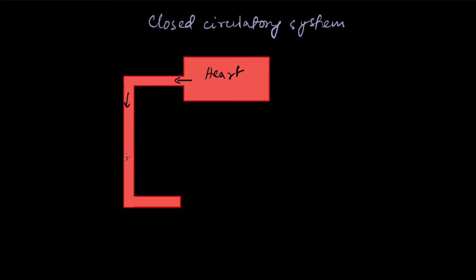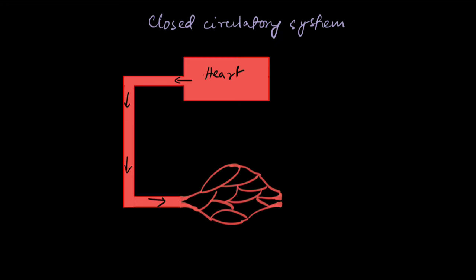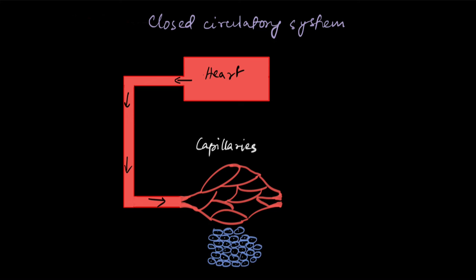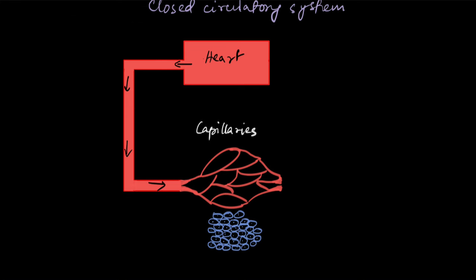The blood flows through these blood vessels, and then the blood vessels subdivide to form very fine, small blood vessels called capillaries. Since capillaries are so small and fine, they can reach all parts of the body — namely, the tissues.